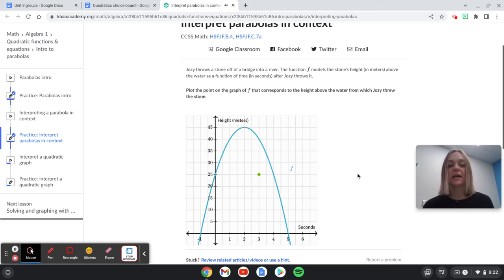Our next one says Josie throws a stone off of a bridge into a river. The function f models the stone's height in meters above the water as a function of time in seconds after Josie throws it. So height in meters and then time in seconds.